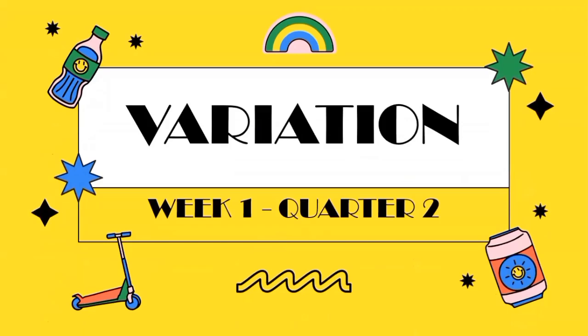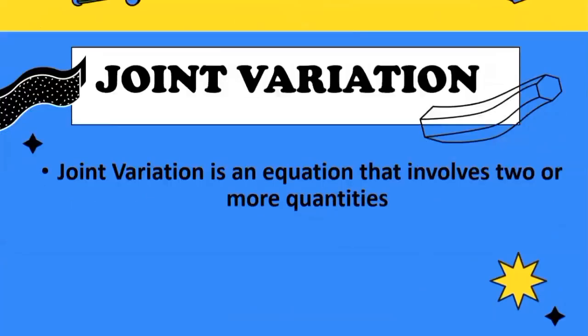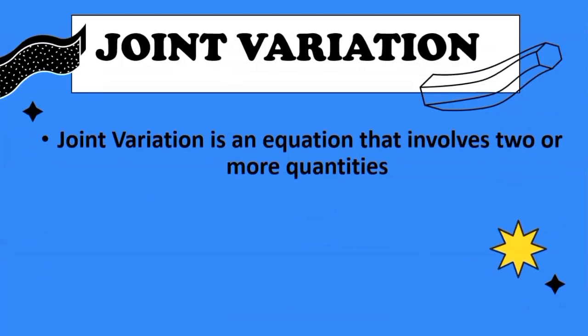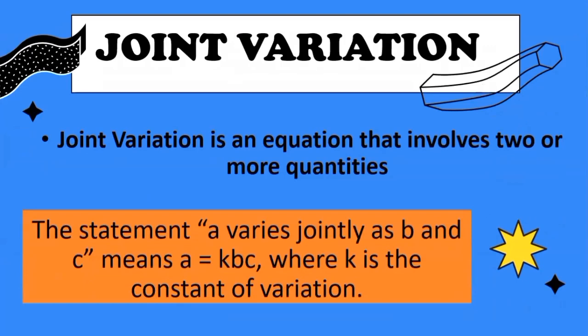Hello again. We are now on the third type of variation for week 1, quarter 2. The third type of variation is what we call joint variation. Joint variation is an equation that involves two or more quantities. If in direct and inverse we only have two quantities, in joint you can have three or more. The statement 'A varies jointly as B and C' means A is equal to KBC, where K is the constant of variation. The three quantities involved are A, B, and C.